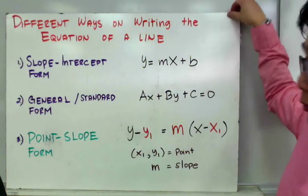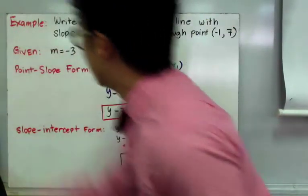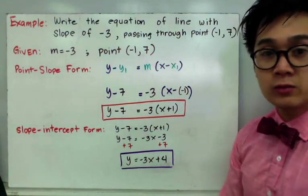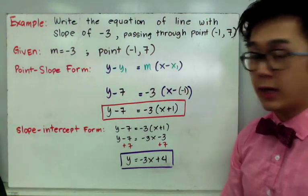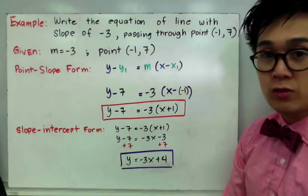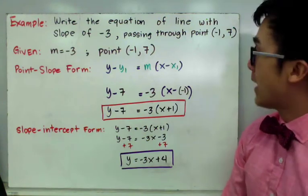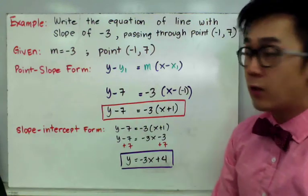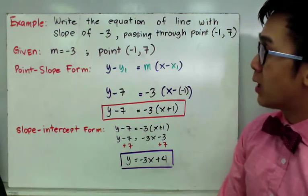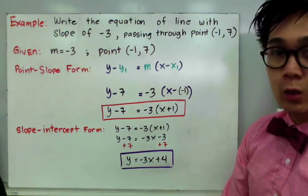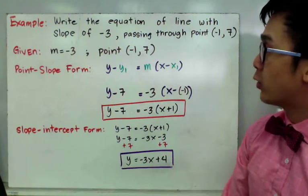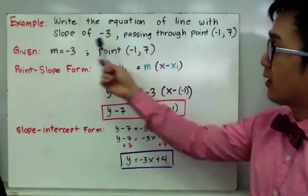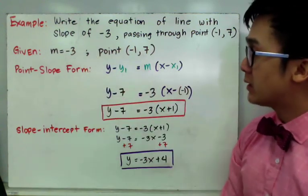Here are some examples. On the first example, we are going to write the equation of a line given the slope of negative 3 and passing through the point negative 1 and 7. In this particular problem, it's easy to use the point-slope form because you are given a point and you are given the slope.